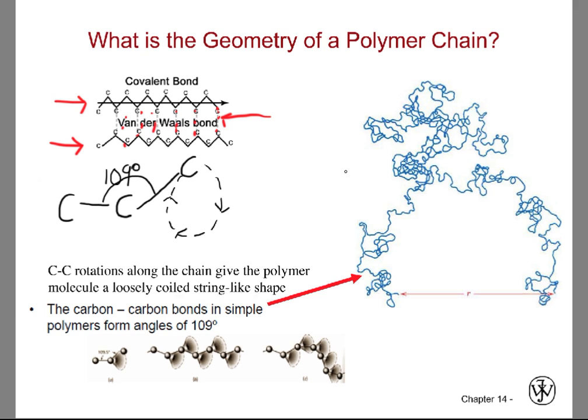Now, if you look over here at this diagram, we see what a polymer chain could actually look like. It is loosely coiled, and it's very string-like. So, why does it do that?